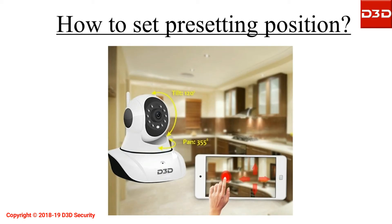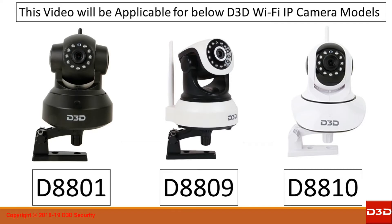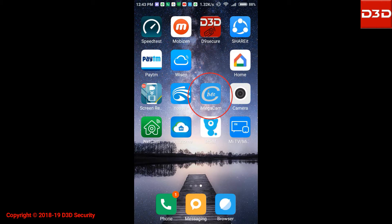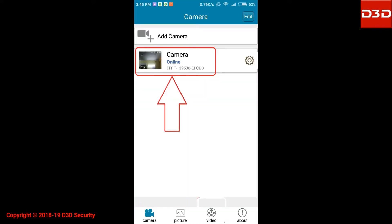This video will explain how to use the preset option of the D3D wireless HD IP camera. This video will be applicable for below D3D wireless IP camera models. Open the mobile application iMegaCam and click on the camera showing online.